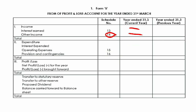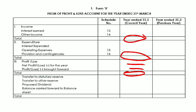Provisions and contingencies include tax-related provisions. With Schedules 15, 16, and provisions and contingencies, we calculate the total expenditure. Then, the profit or loss is calculated. In the Appropriation section, brought forward profit or loss is added. Then 25% is transferred to Statutory Reserves. Other reserves are also mentioned. The remaining amount after proposed dividend is carried to the balance sheet.